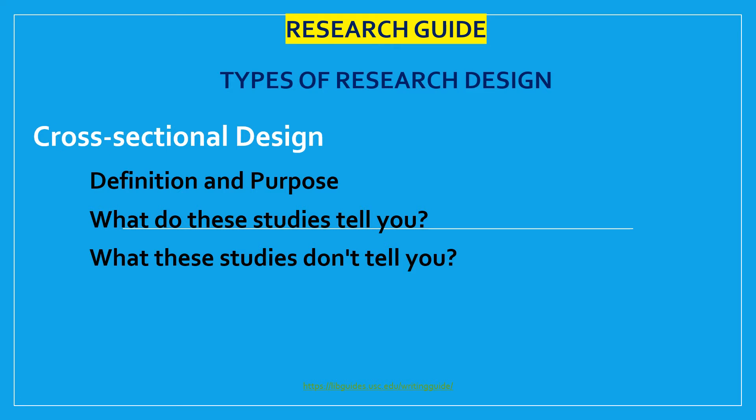The next type is cross-sectional design. It has three distinctive features: first, it has no time dimension; second, it relies on existing differences rather than change following intervention; and third, groups are selected based on existing differences rather than random allocation. The cross-sectional design can only measure differences between or from among a variety of people, subjects, or phenomena rather than a process of change. As such, researchers using this design can only employ a relatively passive approach to making causal inferences based on findings.